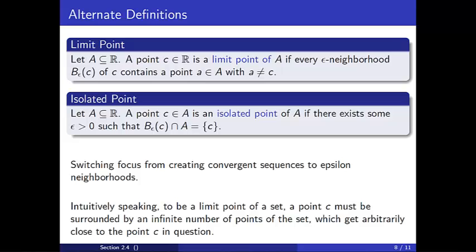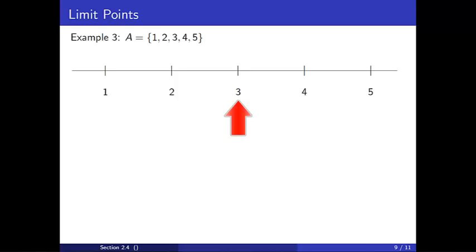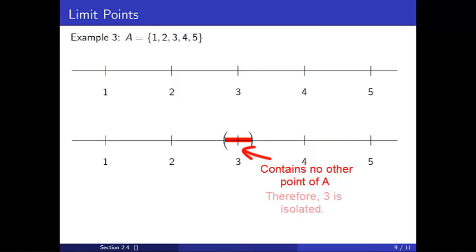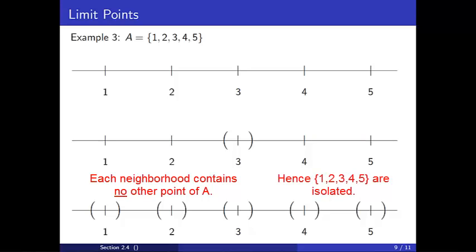Let's revisit our earlier examples, starting with example 3. Here A contained the numbers 1, 2, 3, 4, and 5. Let's plot these on a number line. Consider the element 3 in A — it is possible to find one epsilon neighborhood of 3 which contains no other point of A. Therefore 3 is isolated. Similarly, it is possible to find one epsilon neighborhood around each of 1, 2, 3, 4, and 5 which contains no other point of A. Hence these points are isolated.